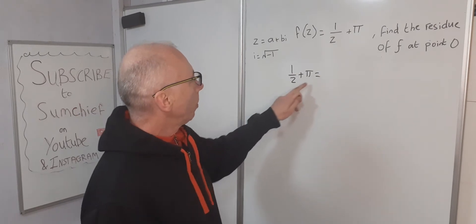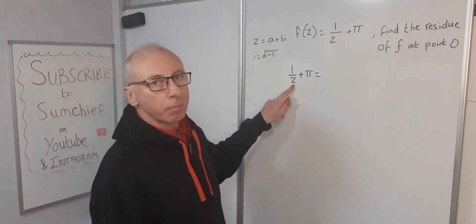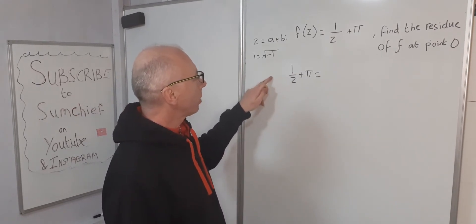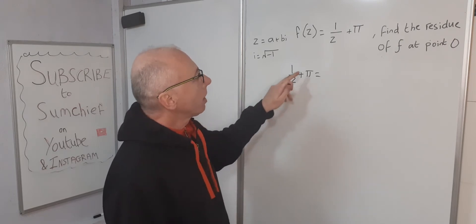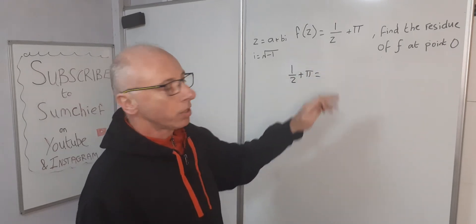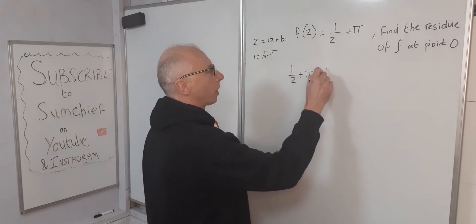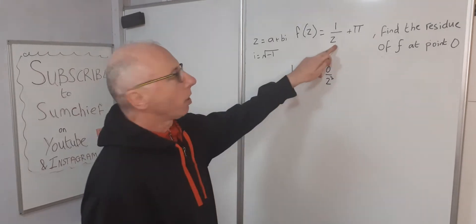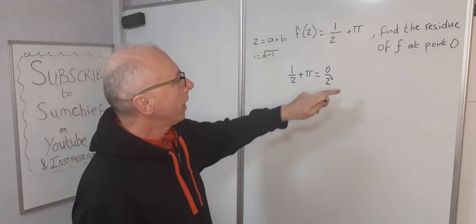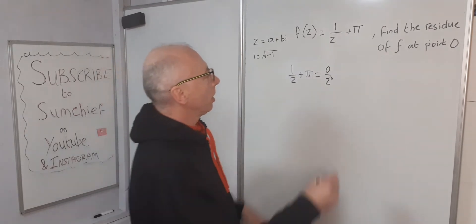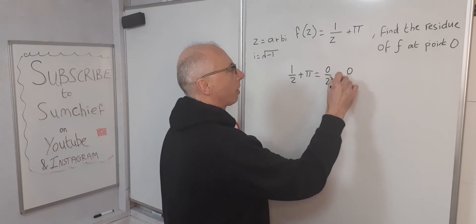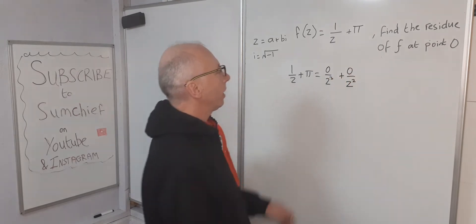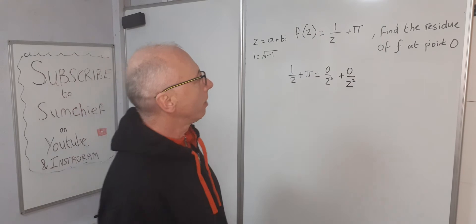Now we can build up all the powers here. We've got z to the minus one, z to the minus two, z to the minus three, z squared, z cubed, and so on. Just to go back a little bit, we can say zero over z cubed - there's no z cubed term in there. Plus zero over z squared - again, no z squared term in there.